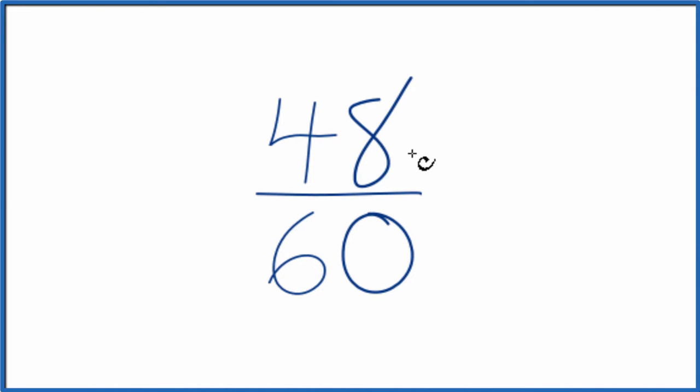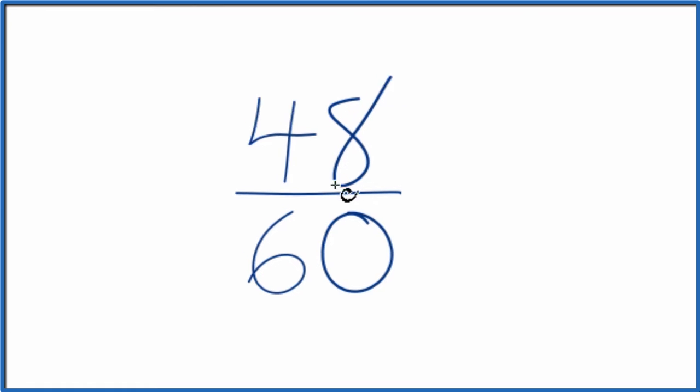To do that, we need to find a factor that goes into 48 and 60 evenly. We're looking for the greatest common factor. So let's list the factors of 48 and then 60.